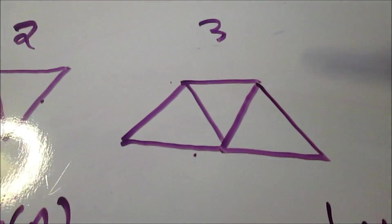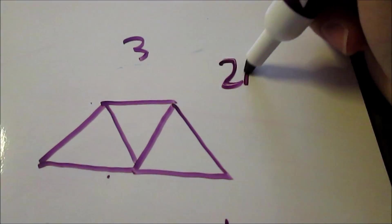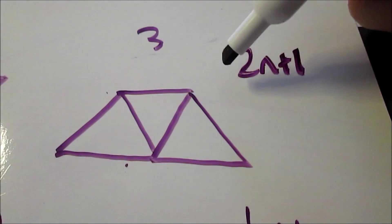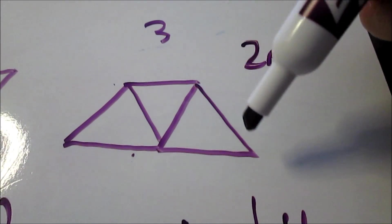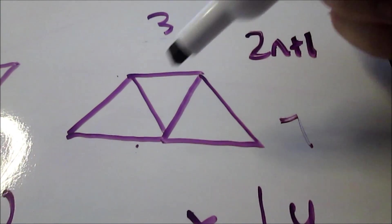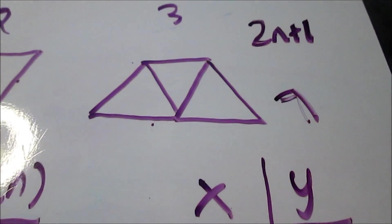And looking at a picture example, 2n plus 1, let's see it. If I did 2 times here, 3, which is 6, and add 1, I should get 7. And there are exactly 7 sticks in this picture. So, it works.